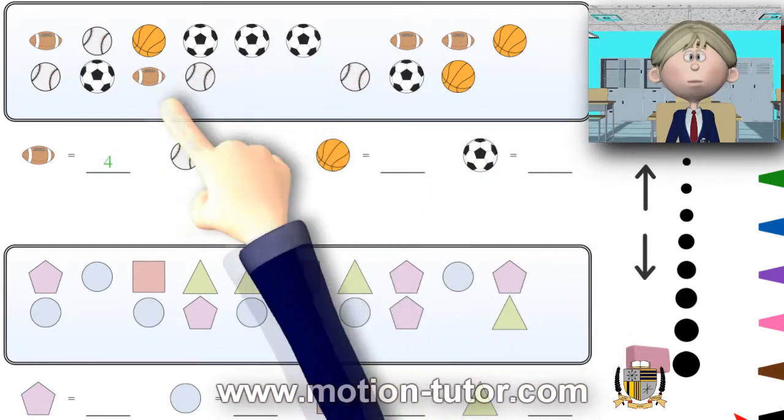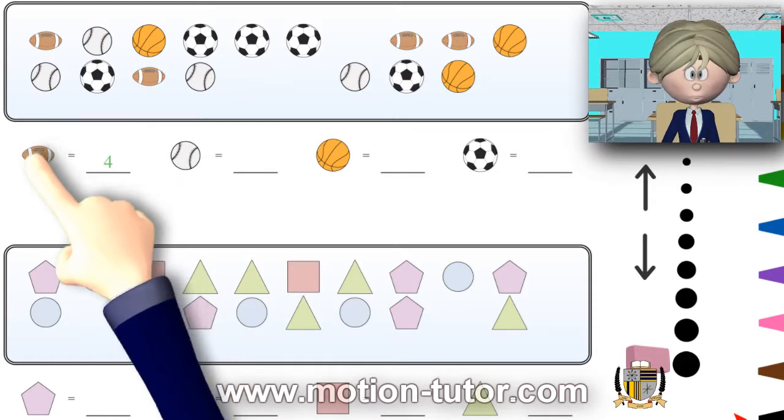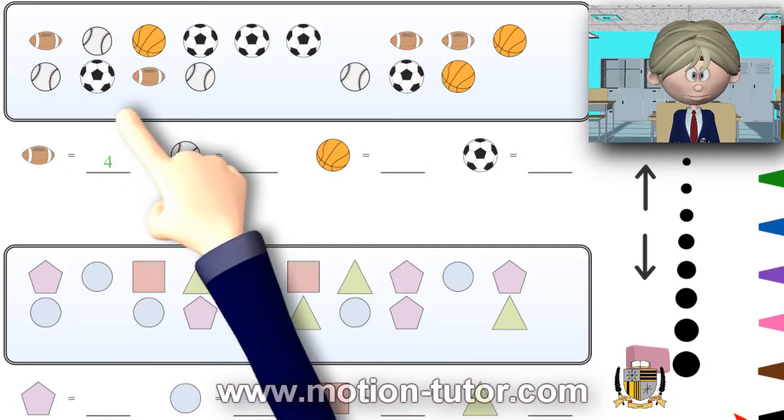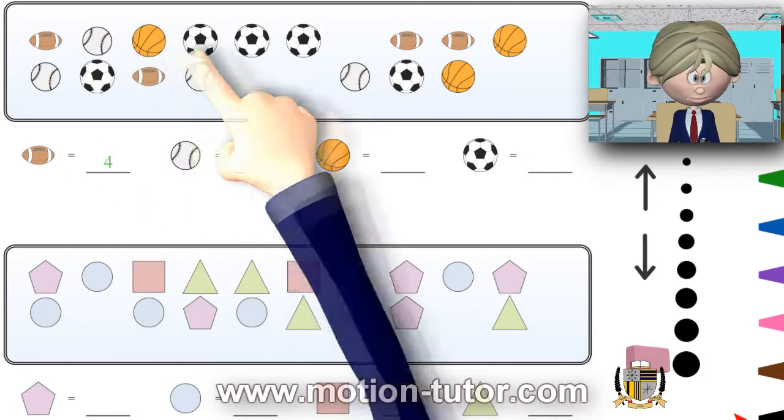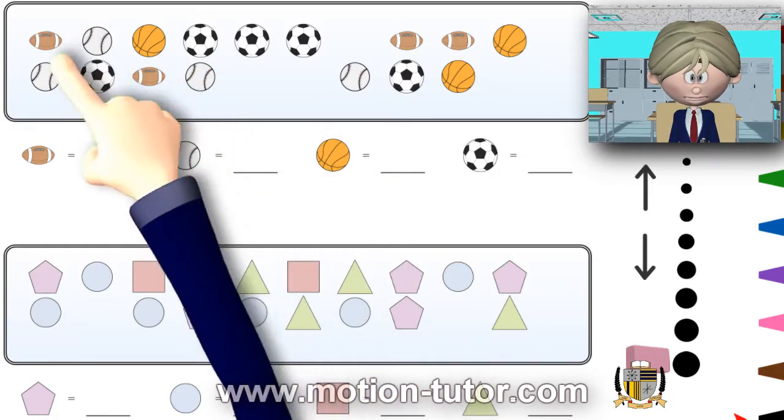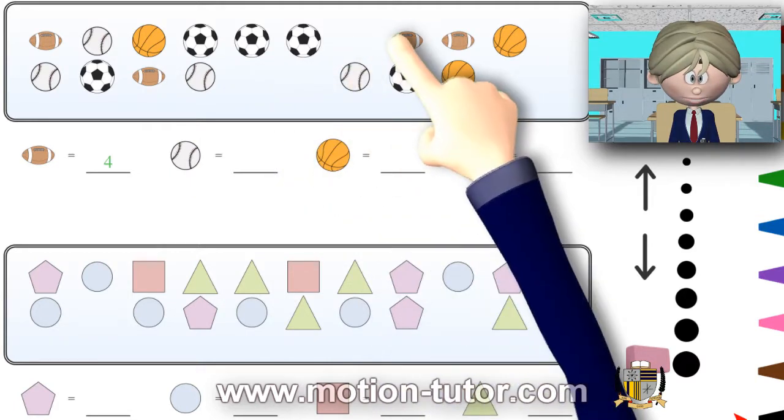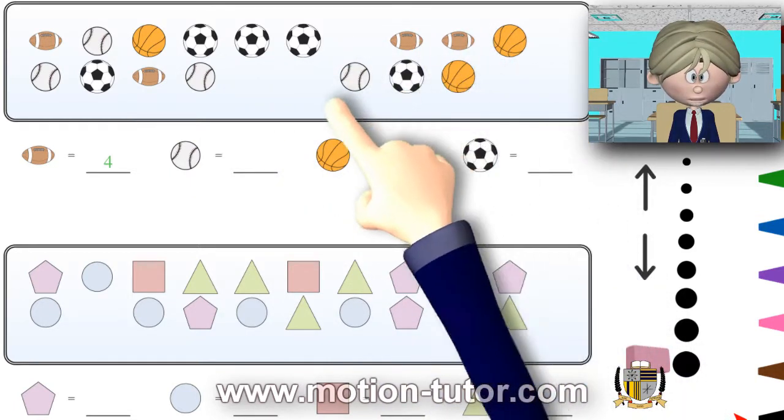So this one's already done for us where they say football equals four. What that means is in this big box there are four footballs, and we can see one, two, three, four. So there are four footballs.